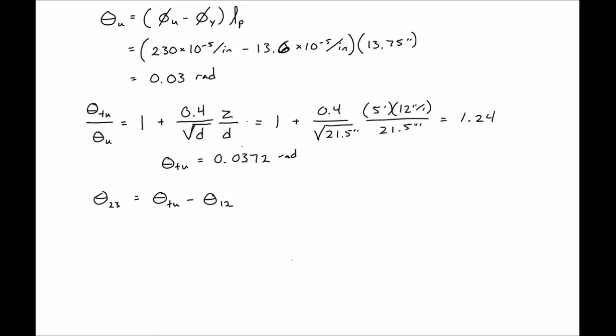Once again our rotation that can occur after we form a mechanism theta two three is equal to our total rotation capacity minus the rotation that has already occurred in the hinge. In our case the rotation capacity is our theta tu 0.0372 and our rotation that's occurred so far we found before to be 0.0065 radians. You can see the previous video for how we found that. So we'll find our available rotation to be 0.0307 radians. And this is what we'll use to find our deflection now.